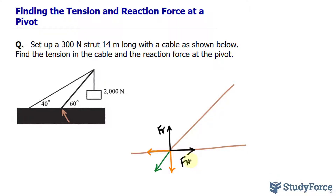I'm more concerned about the magnitude of these components moving forward, because I'll eventually add them up to find the resultant F. I'll call this force F sub V for vertical, and this one F sub H for horizontal. I'm more concerned about the forces that the floor exerts on the strut.